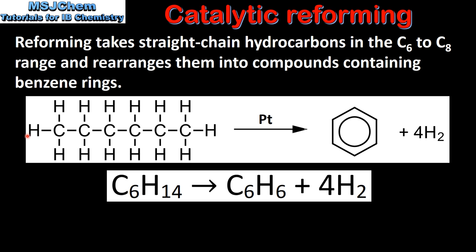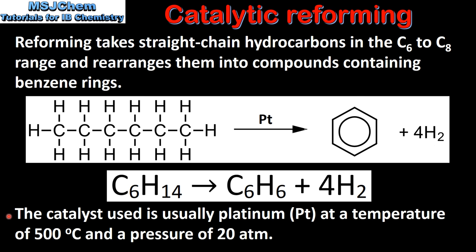In this example we start with C6H14, which is hexane, a straight chain hydrocarbon. The products of the reaction are C6H6, which is benzene, and H2, which is hydrogen gas. The catalyst used is usually platinum at a temperature of 500 degrees C and a pressure of 20 atmospheres.